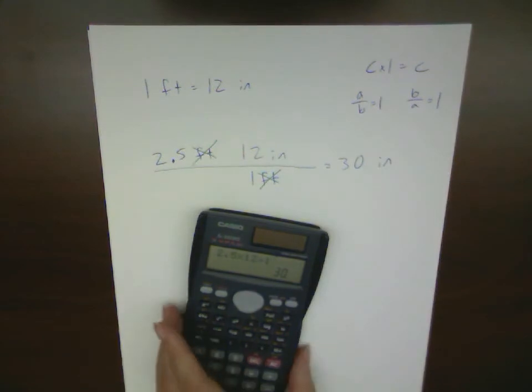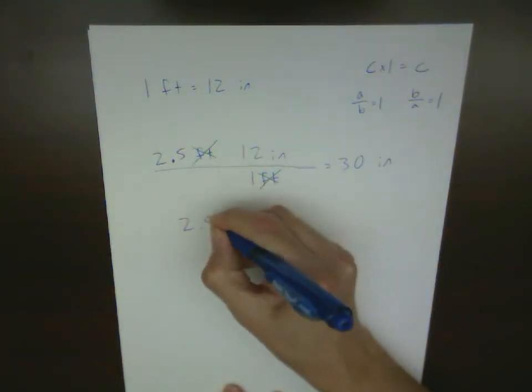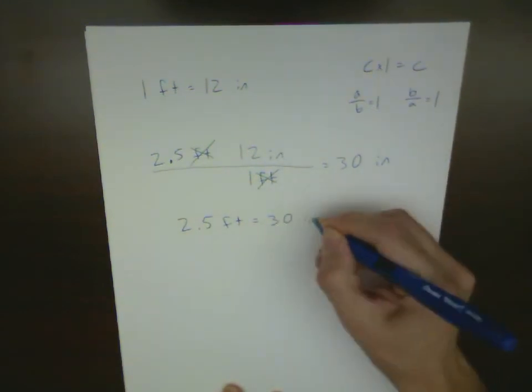So what we've said here after we've done all these conversions is that the basic distance measurement of 2.5 feet is equal to a measurement of 30 inches.